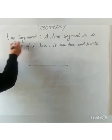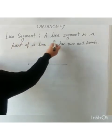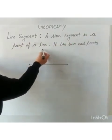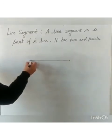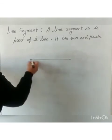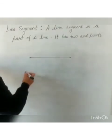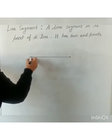Now, next is line segment. A line segment is a part of a line. It has two end points. This is the line segment. And these are the two points. And these two points are end points.